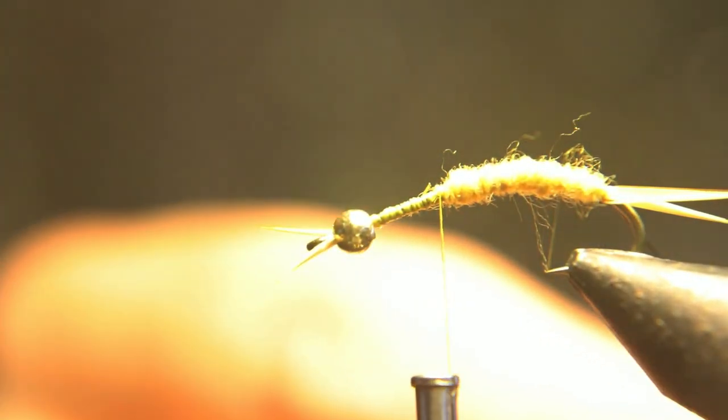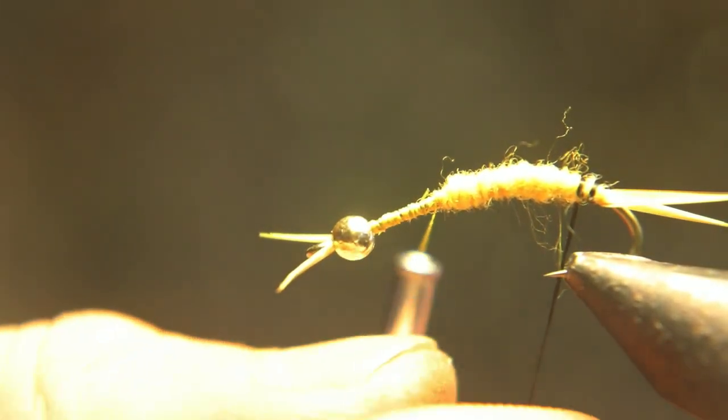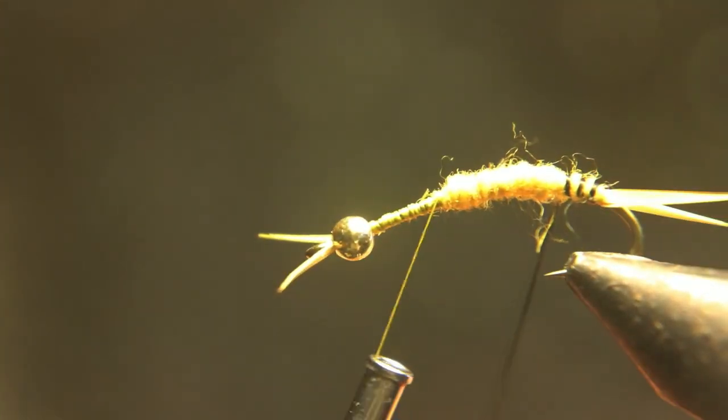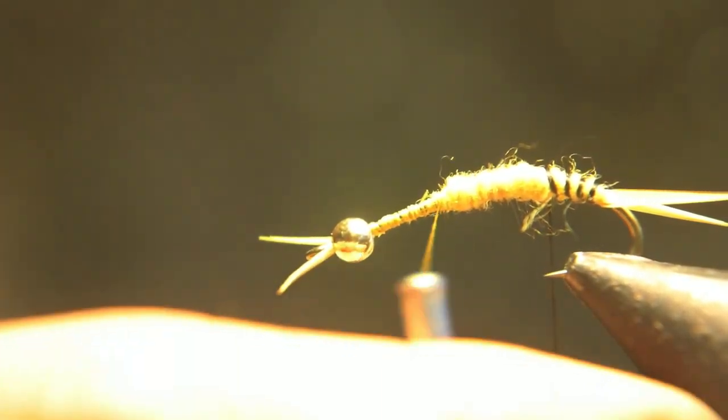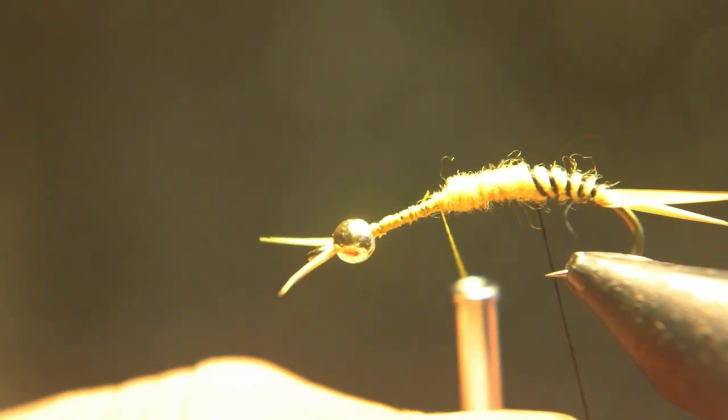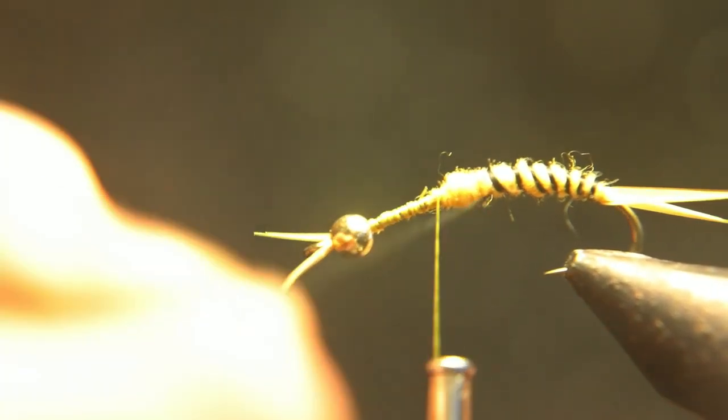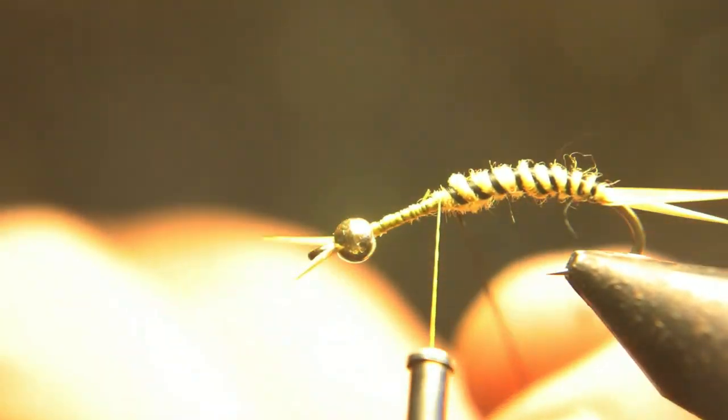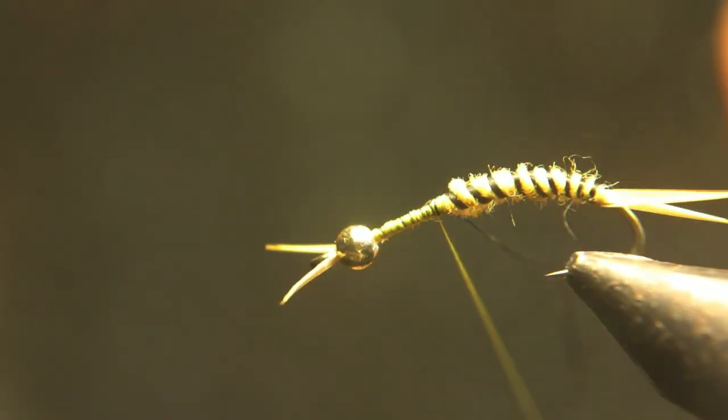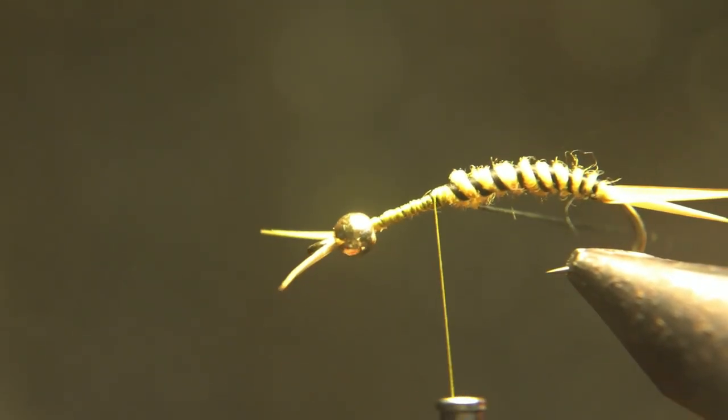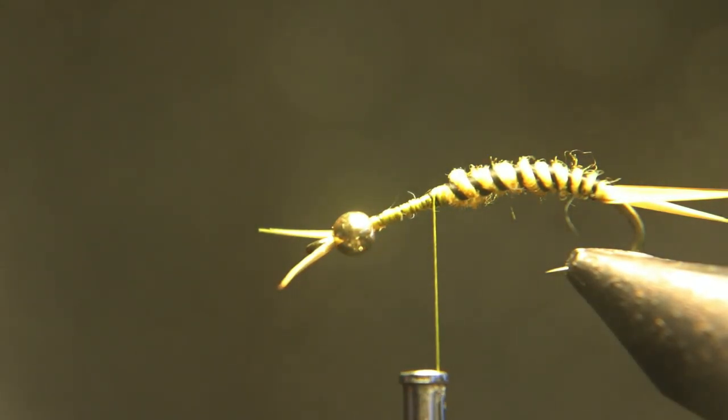I'm going to take your wire, or your thread in my case, and wrap it the opposite way you wrapped your dubbing. This will make it more secure plus you'll see your ribbing better. If you want to get fancy, you could start your thread wrapped closer together at the tail and further away up at the thorax area. This will make it look more natural. Trust me, it ain't going to help you catch more fish. Fish don't give a damn how the ribbing looks. I've tried it both ways with sloppy dubbing and they caught just as many fish.